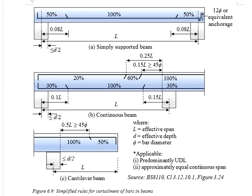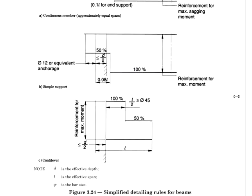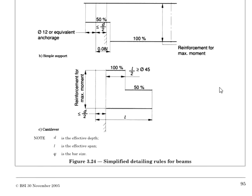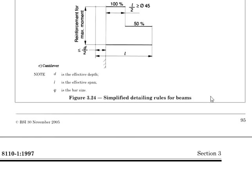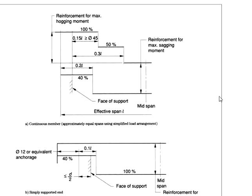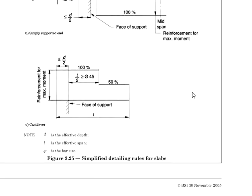Let us continue with our discussions about the curtailment of reinforcement in reinforced concrete members. Previously, we talked about the simplified rules for the curtailment of bars in beams based on the recommendations given by the British Standard BS 8110, found in Table 3.24. In this video, we are going to talk about the curtailment rules given by the British Standard in reinforced concrete slabs, which you may refer to in Figure 3.25 of British Standard BS 8110.